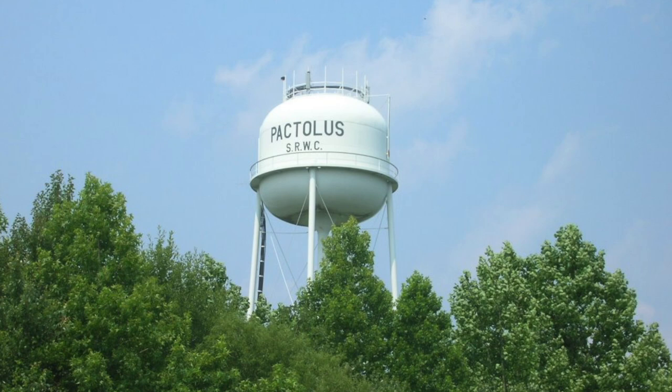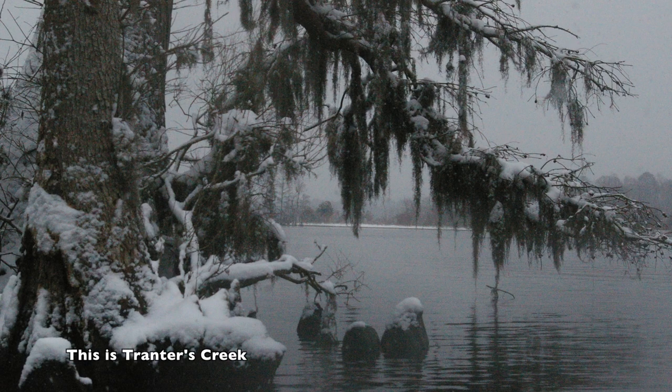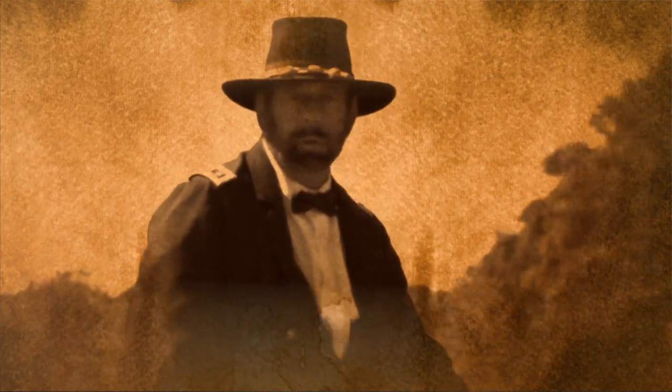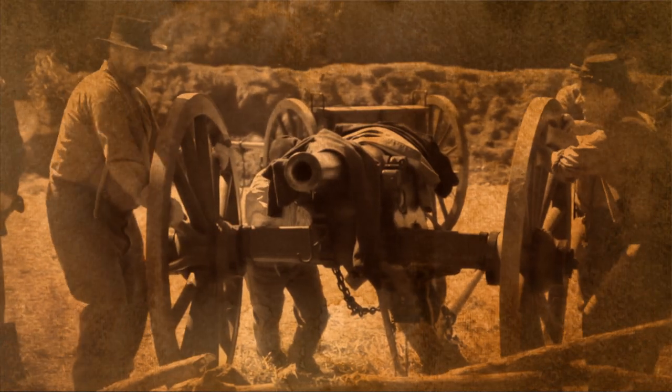Osborne and his men continued forward, and about three miles from the town they came across a bridge over Tranter's Creek and encountered the Confederate 44th North Carolina under the command of Colonel George Singletary, which was comprised of about 400 Confederate soldiers. Osborne attempted to cross the creek but found he could not budge Singletary and his men, who had hidden inside an old mill on the other side of the river. Osborne's men were pinned down on the bridge and on their side of the river by the Confederates and unable to move.